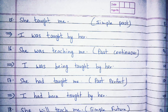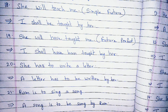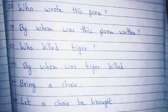She will teach me — I shall be taught by her. She will have taught me — I shall have been taught by her. She has to write a letter — a letter has to be written by her. Ram is to sing a song — a song is to be sung by Ram.